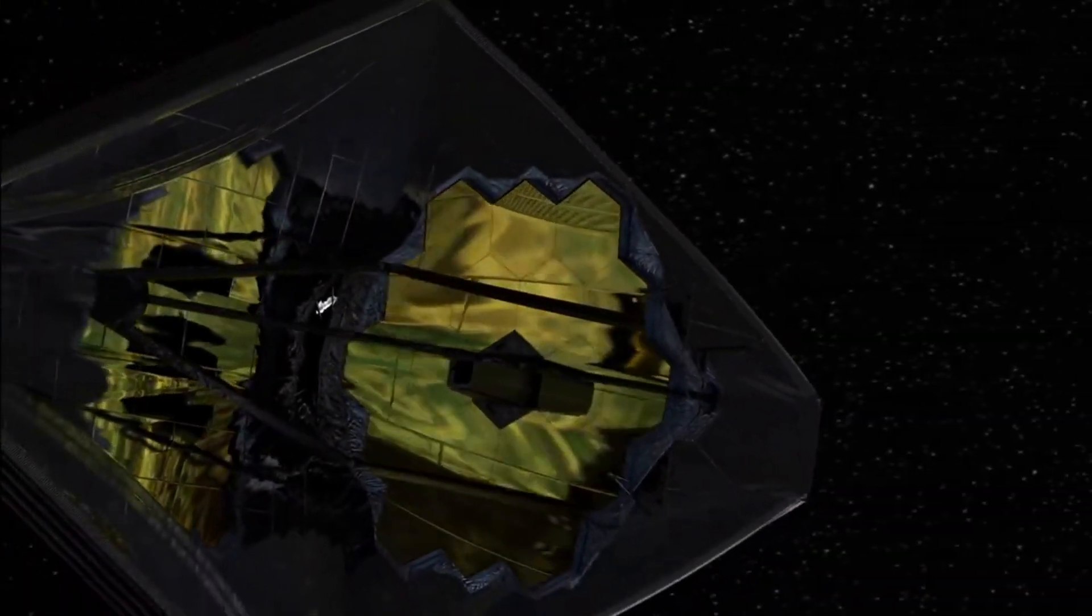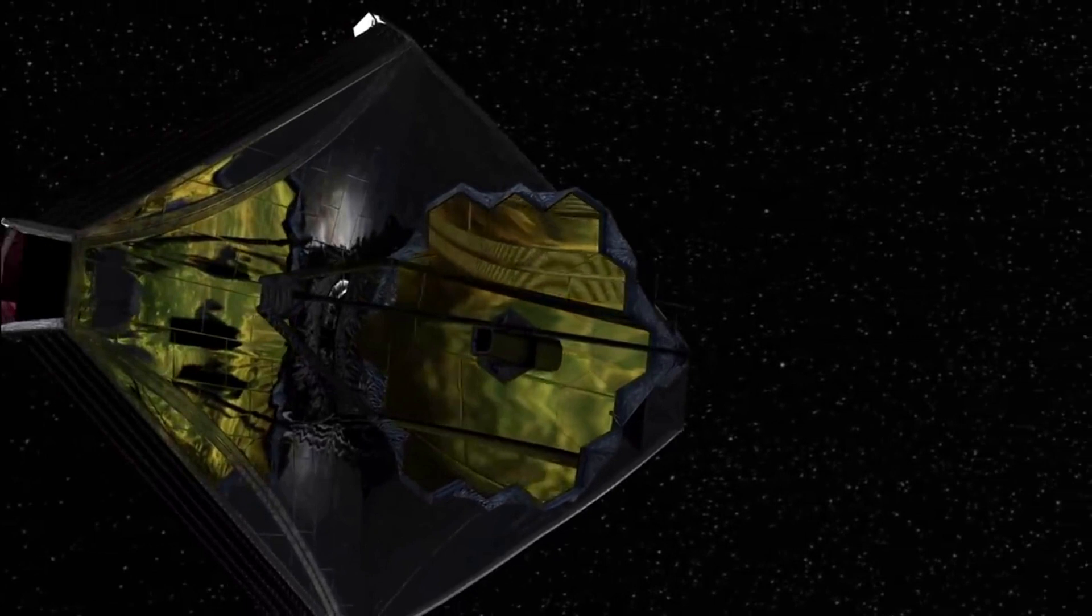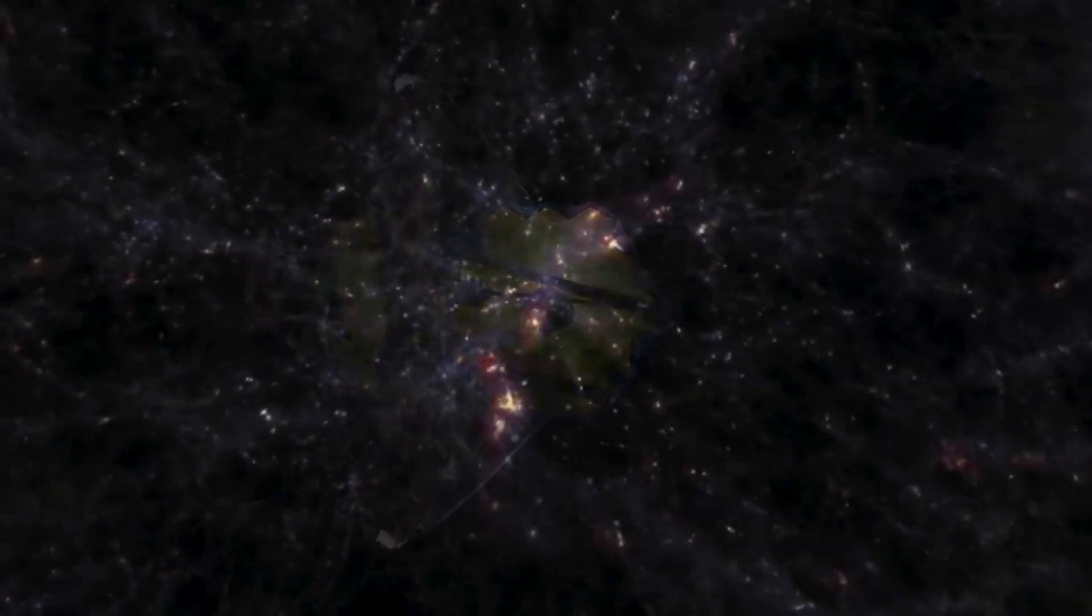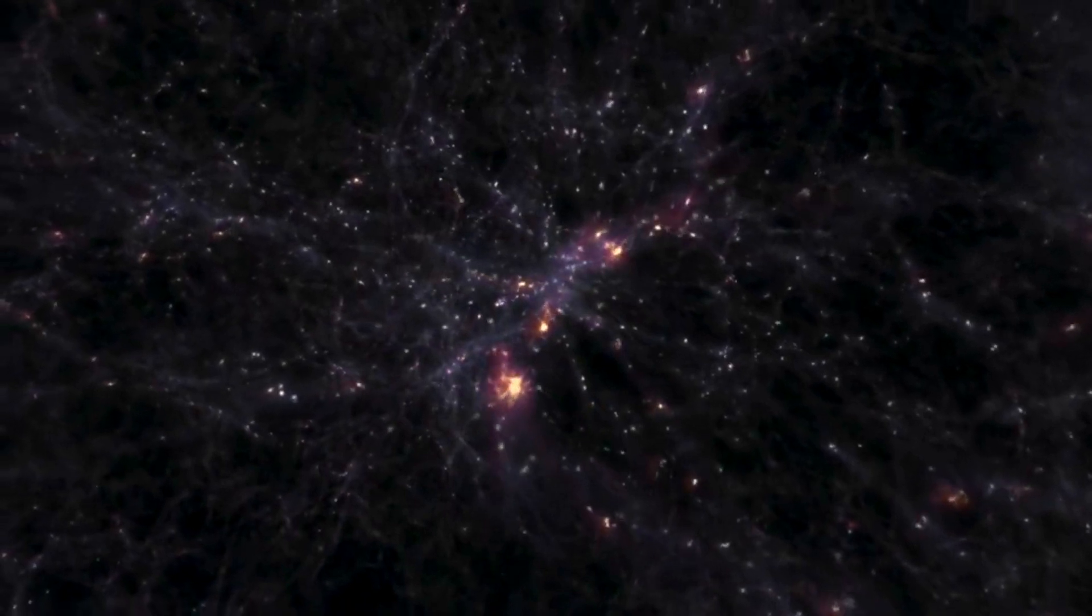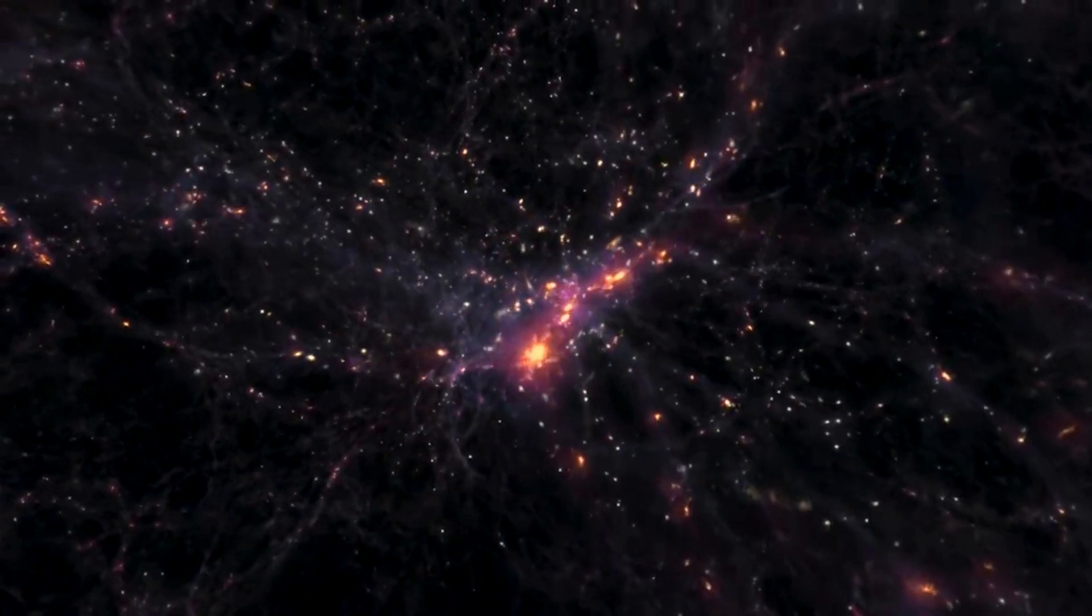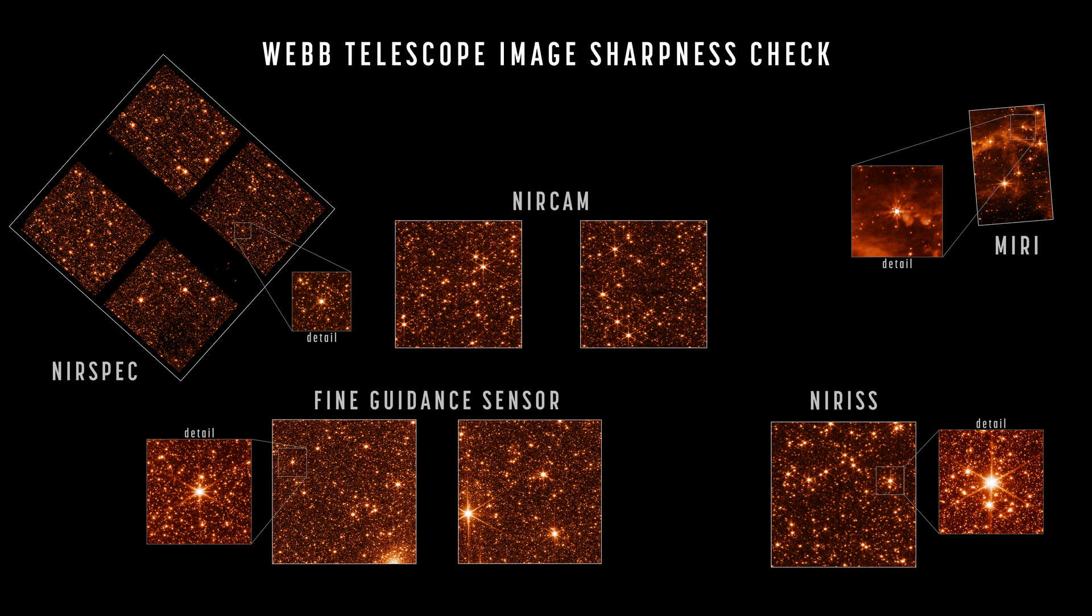Specifically, engineering images of sharply focused stars in the field of view of each instrument demonstrate that the telescope is fully aligned and in focus. For this test, Webb pointed at part of the Large Magellanic Cloud, a small satellite galaxy of the Milky Way, providing a dense field of hundreds of thousands of stars across all the observatory sensors. The sizes and positions of the images shown here depict the relative arrangement of each of Webb's instruments in the telescope's focal plane, each pointing at a slightly offset part of the sky relative to one another.